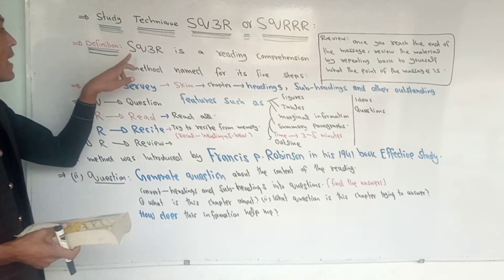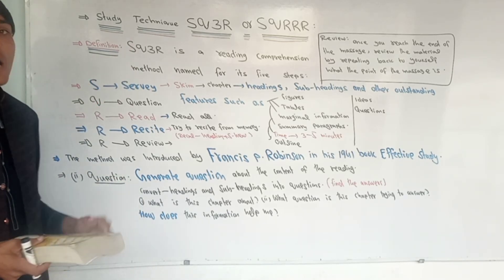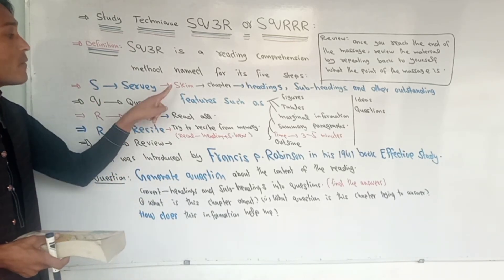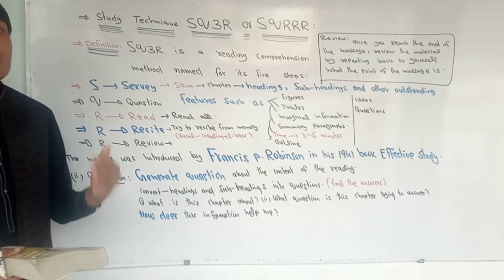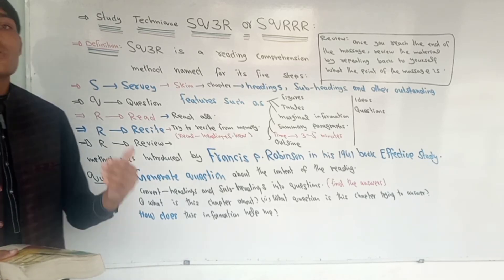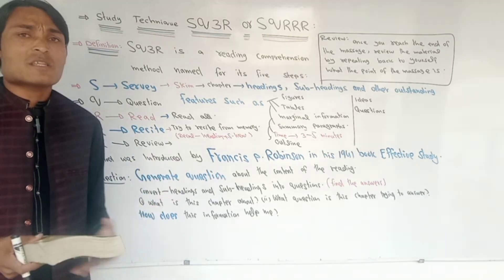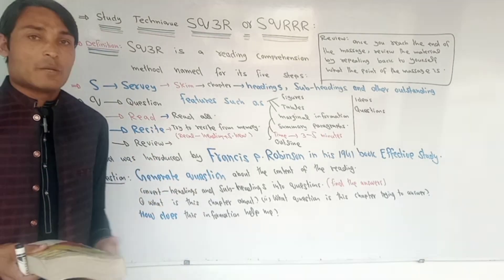So we have five steps. First, SQ3R — what does it mean? The first letter S stands for skimming reading, also called survey. It is a quick reading technique.